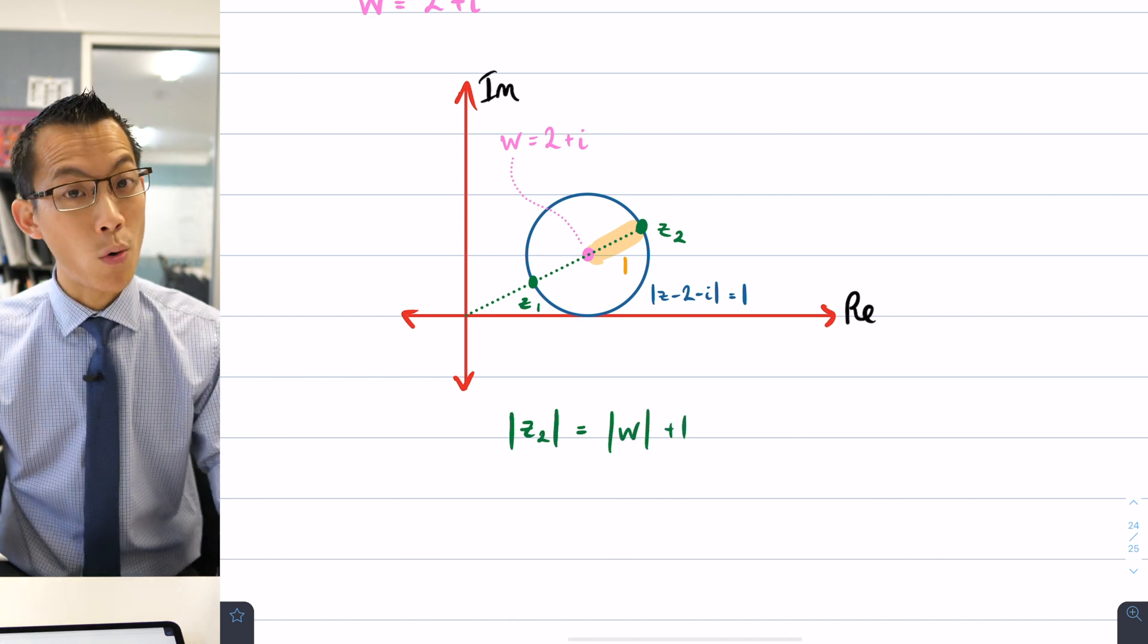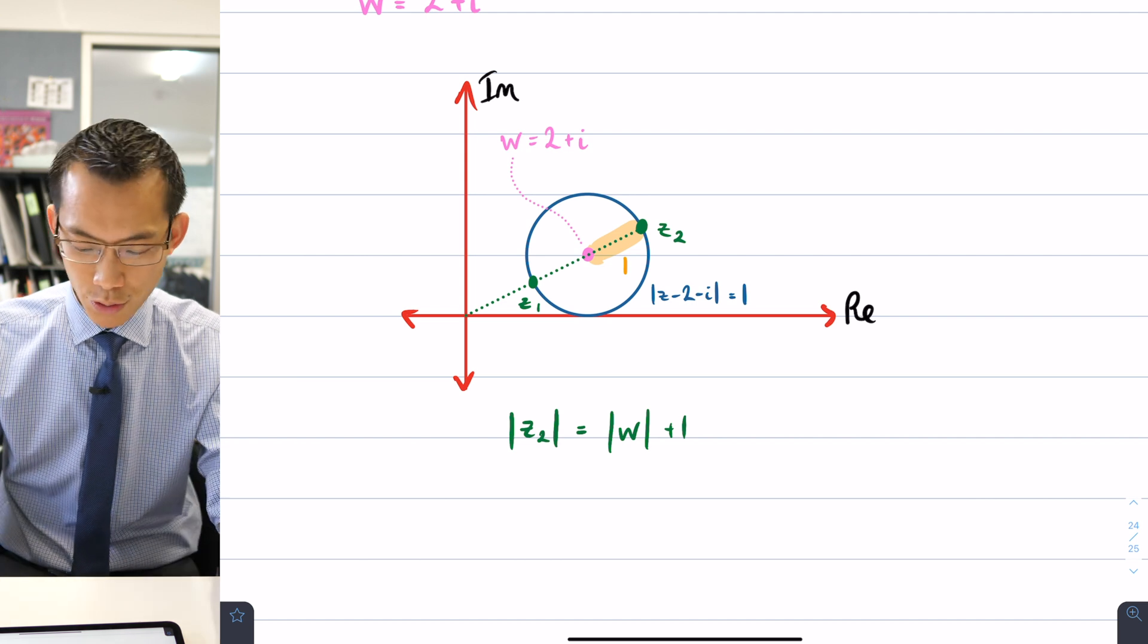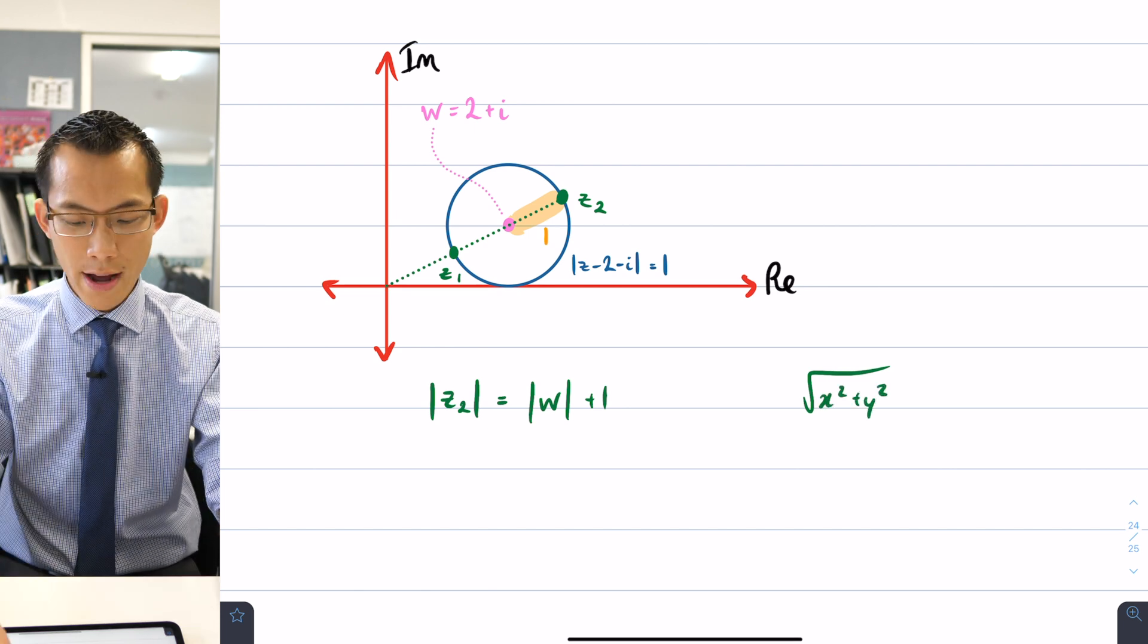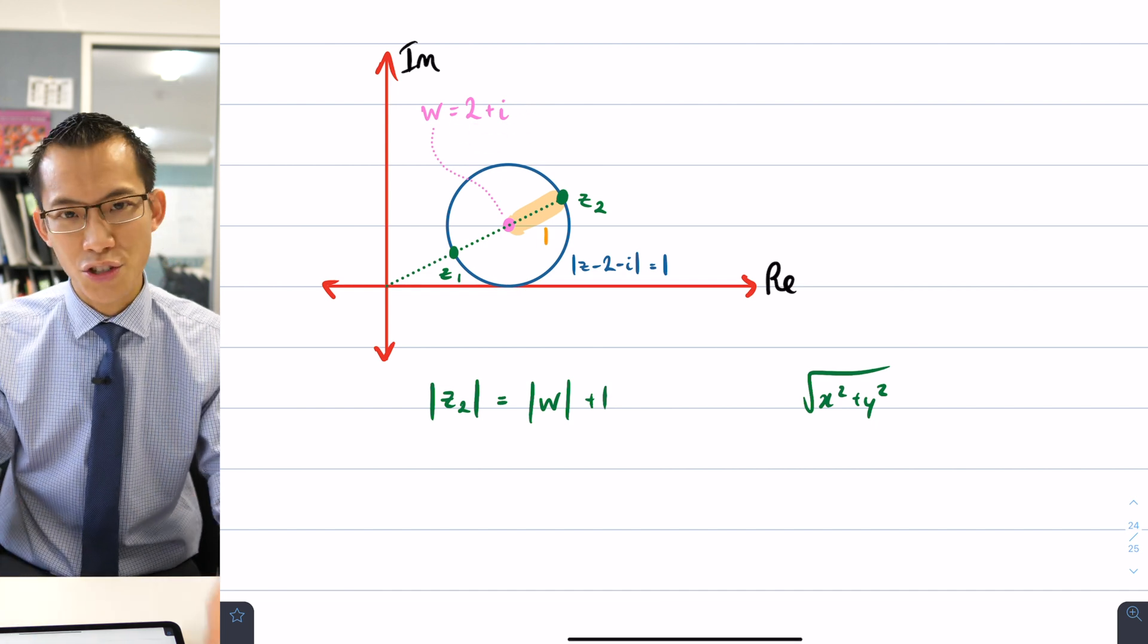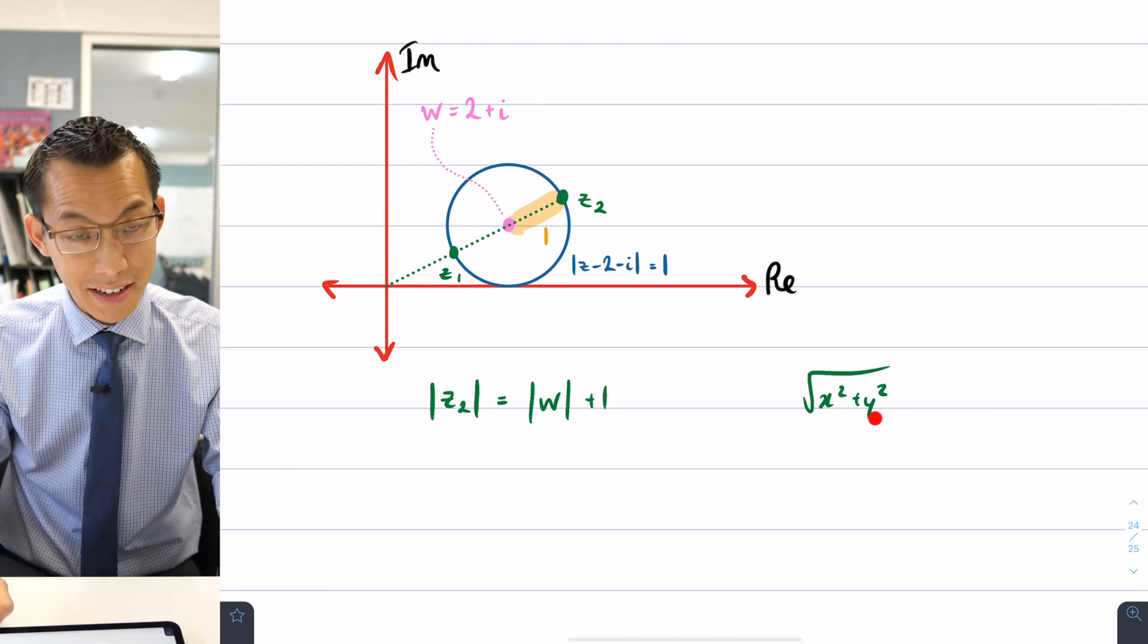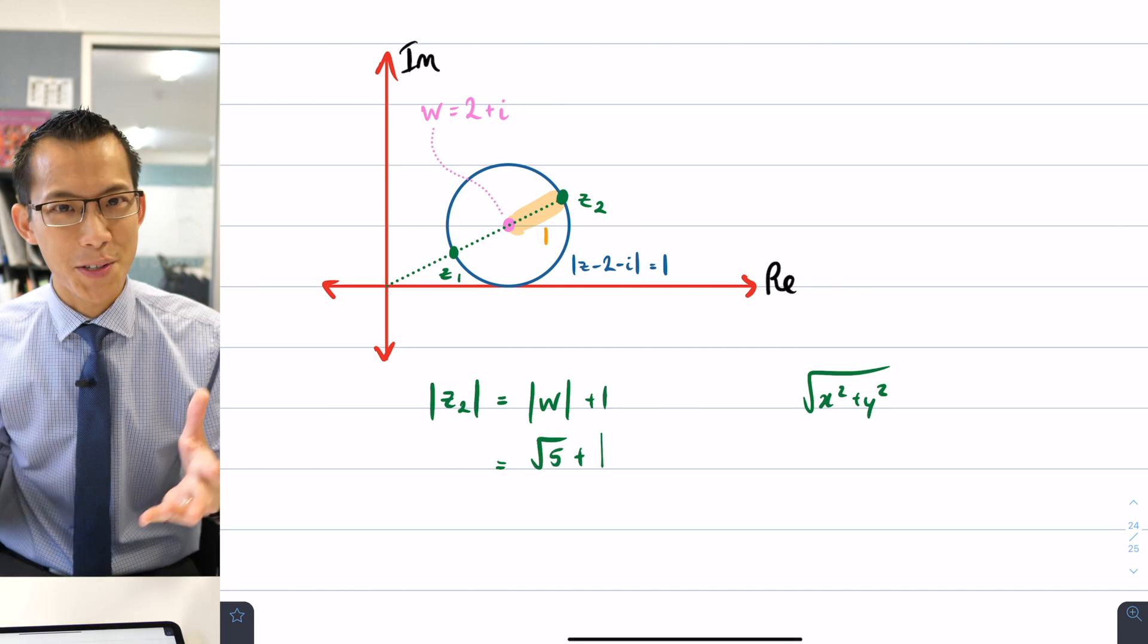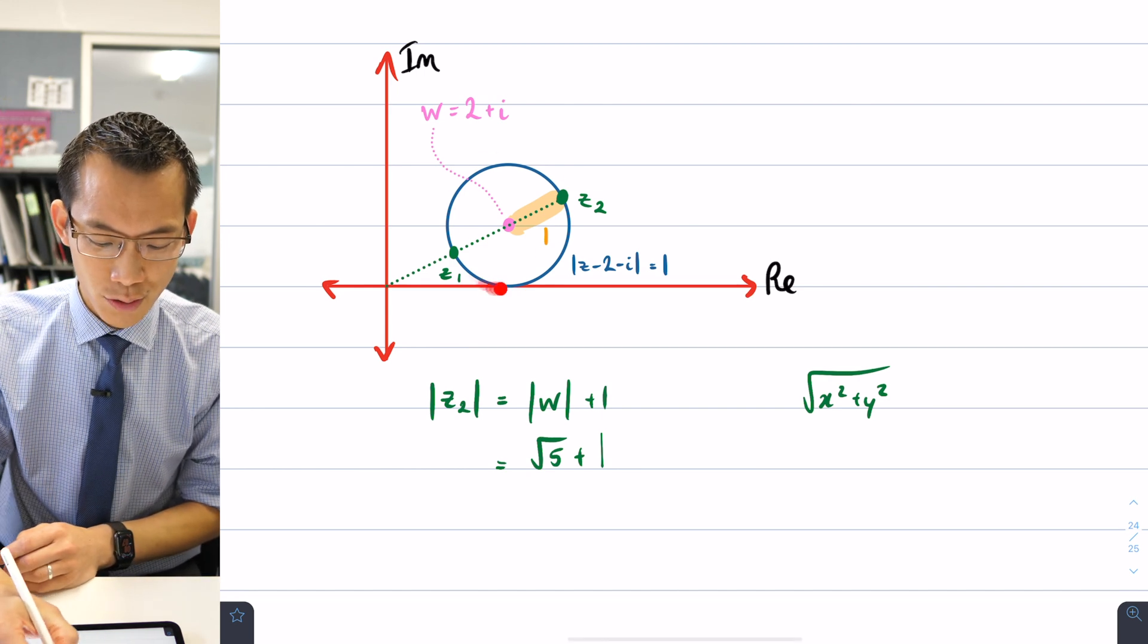Now thankfully the modulus of w I mean we can just use our algebraic definition. It's going to be the square root of x squared plus y squared where x and y are going to be our real and our imaginary coefficients here but because it's just two and one maybe you can recognize that once you put two in here and one in here you're going to get a very easy number. This is square root of five plus one so that is the modulus of z2 the furthest place that z can go to on the circumference of the circle so there's my maximum value for the absolute value z.